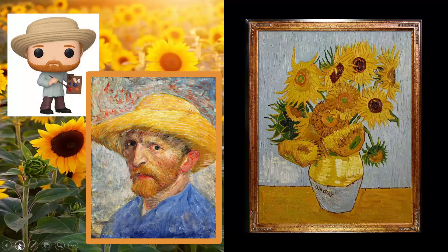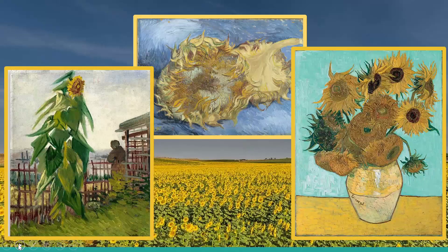Van Gogh loved sunflowers so much he spent a lot of time outside studying how sunflowers really looked, and then he practiced painting sunflowers over and over again in his studio. He loved sunflowers so much that he wanted to be known as the painter of sunflowers. He sure is, because even today, a long time later, we still celebrate him and love all of the sunflowers he painted.